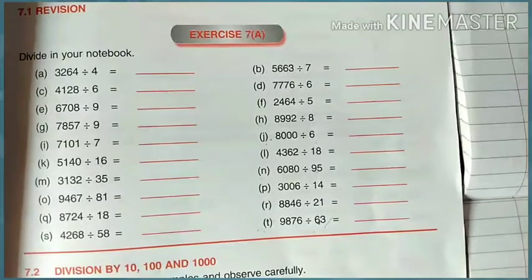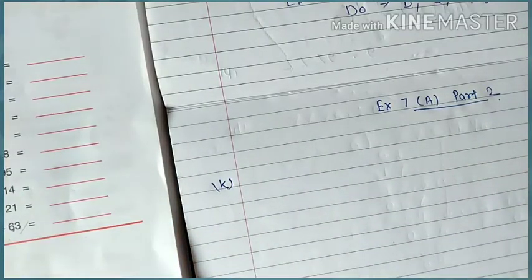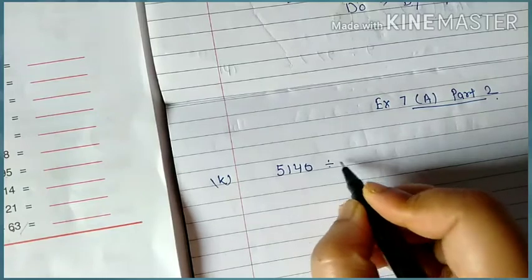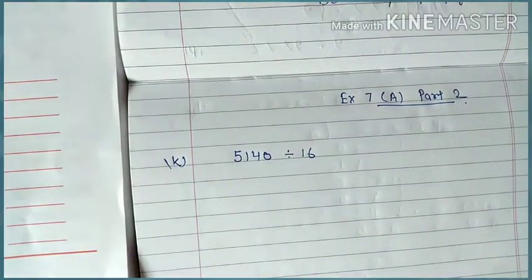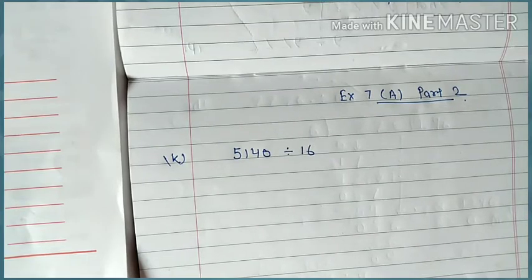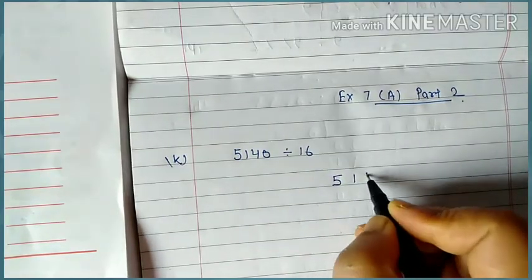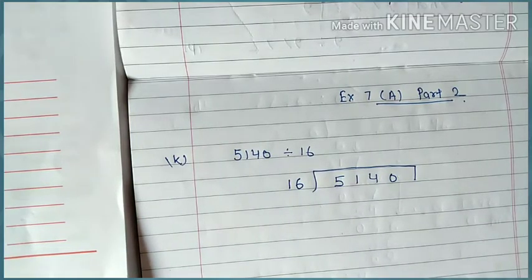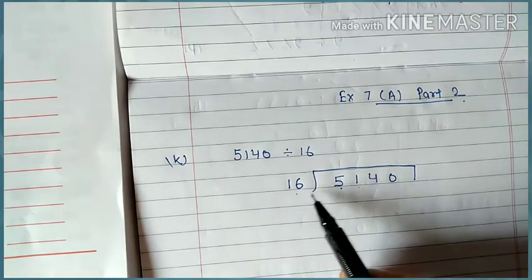Let's start this class and learn how to do division with two digit numbers. Let's do K. Problem K is 5140 divided by 16. I am asking you to learn tables up to 30, but even if you do up to 20, it will help a lot with your sums. Now what we are going to do: 5140 divided by 16. We are going to take two digits here.